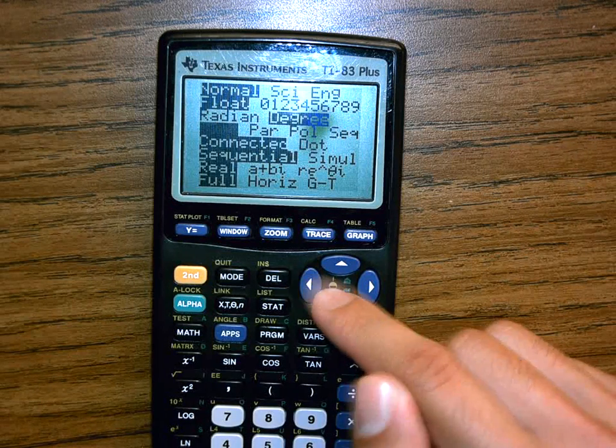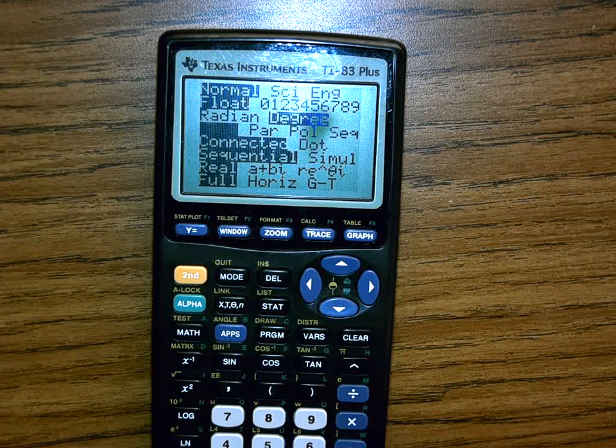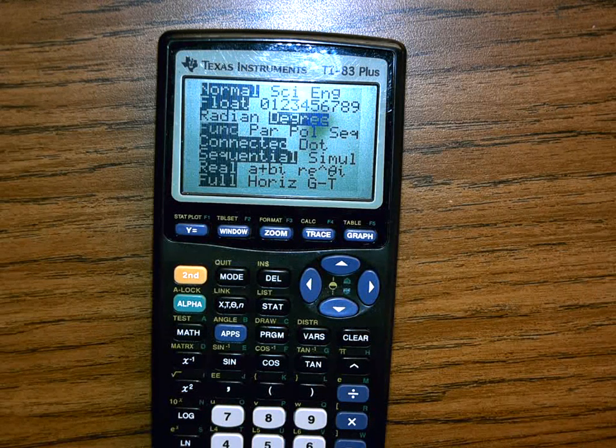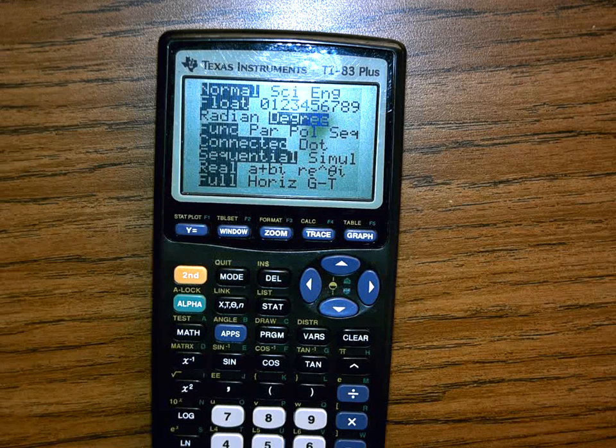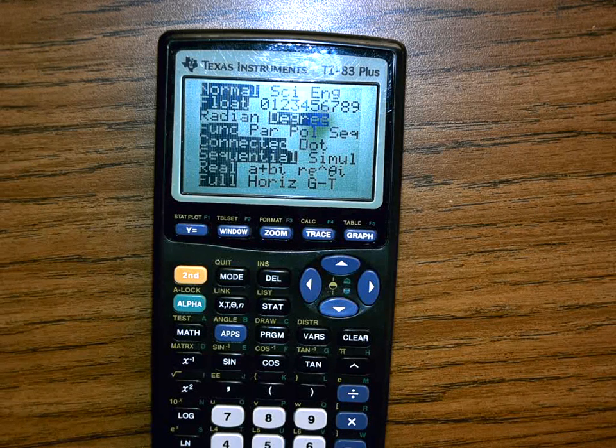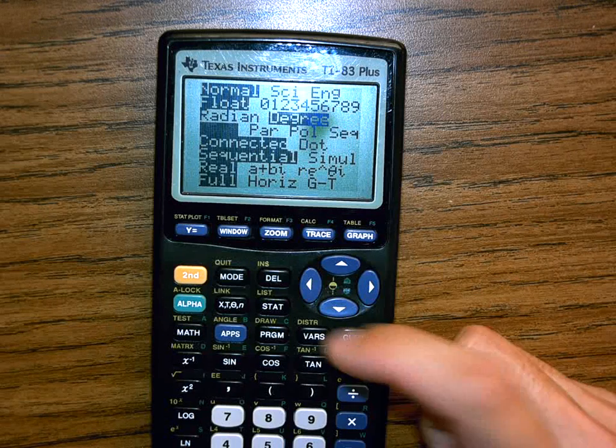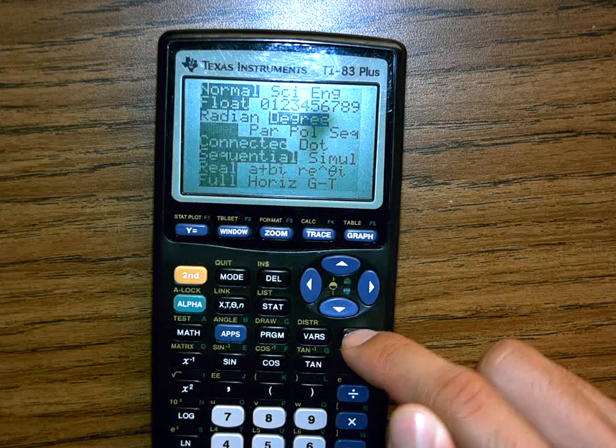I also want to double check that I have function. I'm going to do this as a function. I want to double check that I have my calculator set to a function and I'm in degrees. Got it? I'll press clear to get out of this.